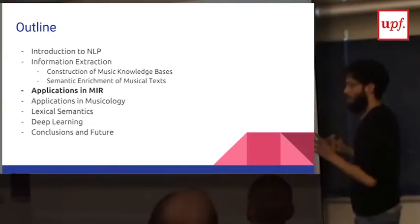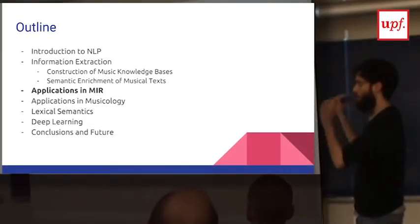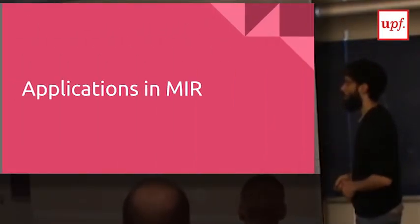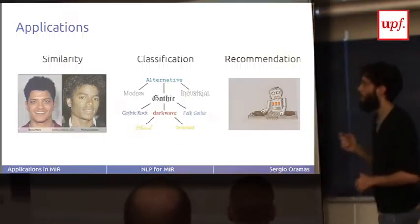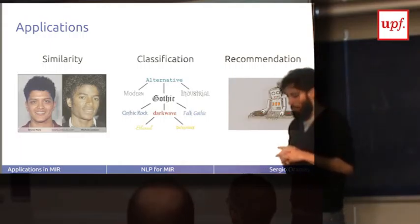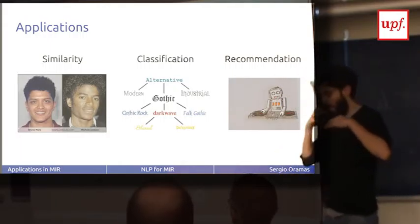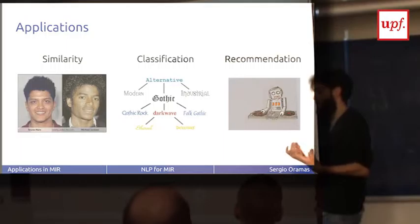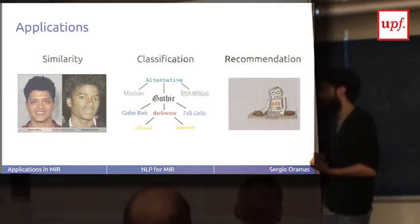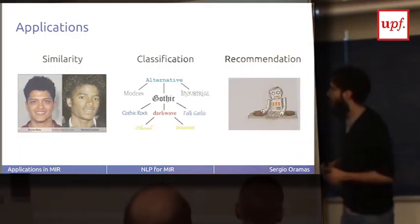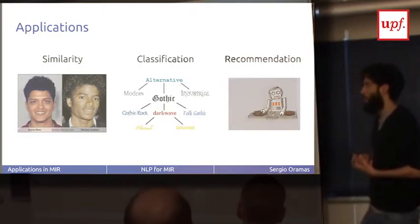This is the idea we are going to use for MIR. I'm going to do this before the break. So applications in MIR, where MIR means music information retrieval. I'm going to focus on three very important applications in MIR: similarity, classification, and recommendation.